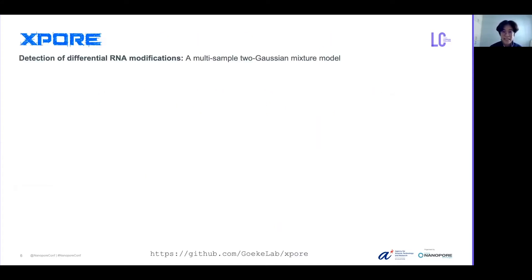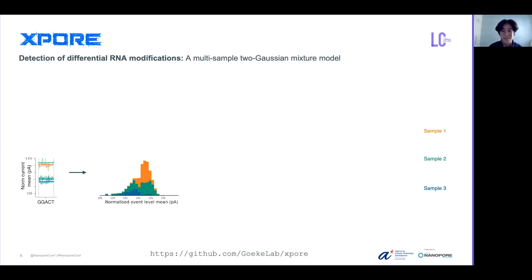The key idea to develop Xpore is that we modify the standard two-Gaussian mixture model to accommodate multi-sample comparison, so that differential RNA modifications can be captured. Let me give you a GGACT site as a use case to describe how the model works. Imagine this site has many reads for three samples shown in three different colors. When modified reads are mixed with unmodified ones, you see a gap in the intensity level, which turns out to be a bimodal distribution in the density plot. I'd like to show the corresponding graphical model alongside, to help explain the relationships among the model variables mathematically.